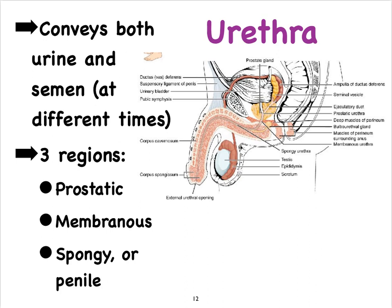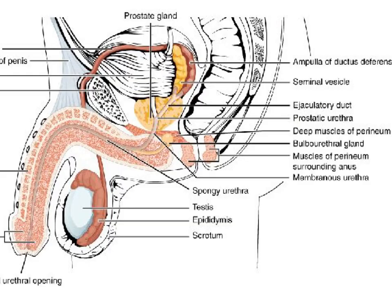Let's first take a look at the three major regions of the urethra. The three regions are referred to as the prostatic urethra, the membranous urethra, and finally the spongy urethra, which we can also call the penile urethra.